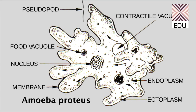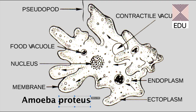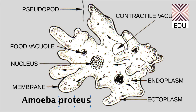As the species name indicates, Proteus is the name of a god which can change its shape. Amoeba can also change its shape, so it has got no fixed shape or size. That's why the species of the amoeba is Proteus.